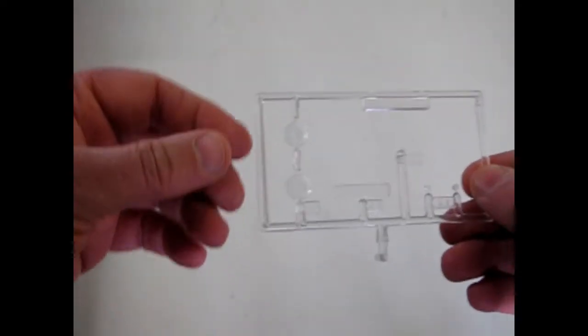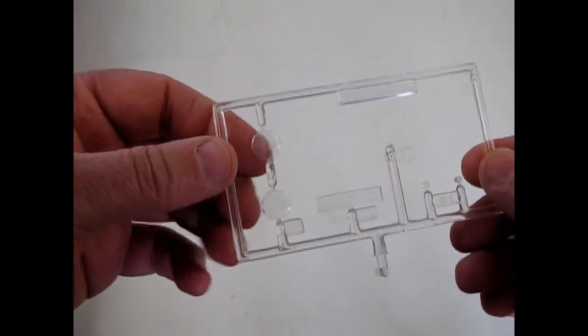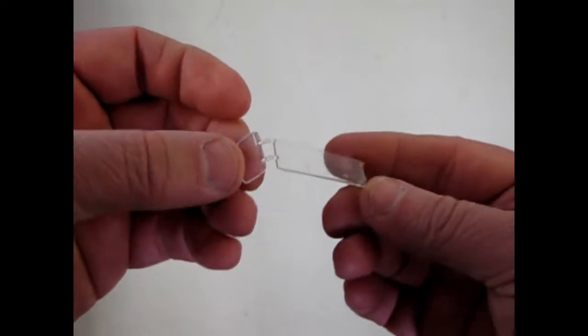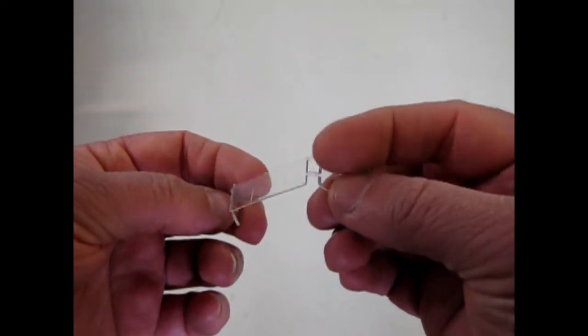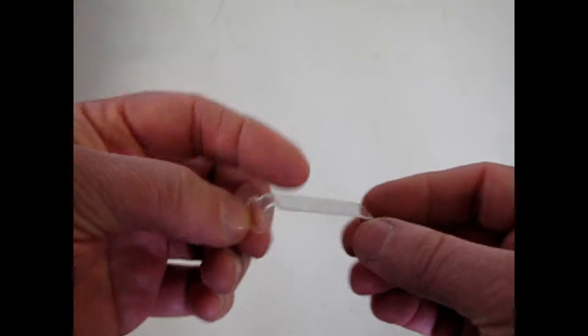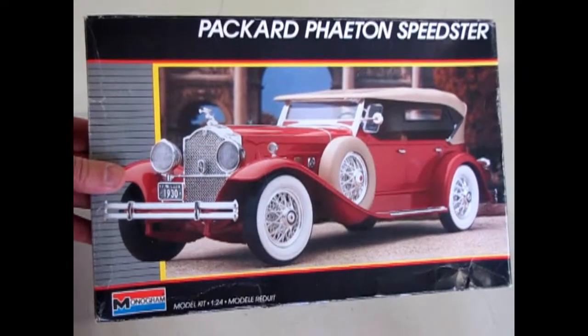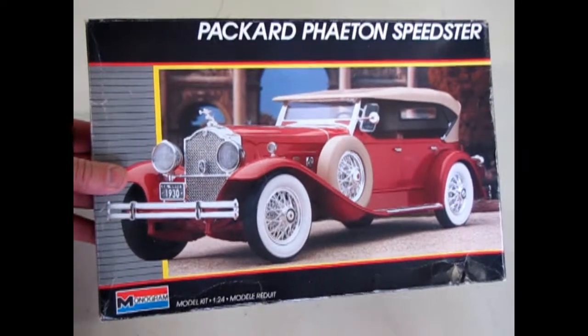And here are the clear parts. You can see just how big those headlights are. And the windshield glass is separate because I was starting to build this. But it's got those nice little side window vents. And that is a look at our Packard Phaeton Speedster.